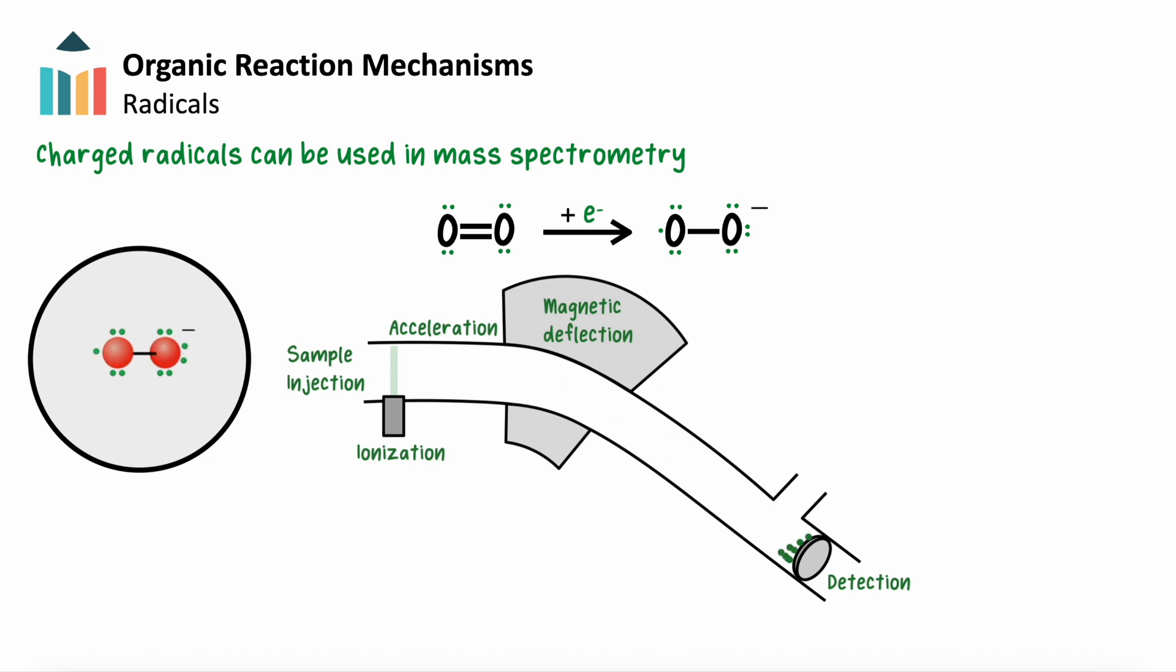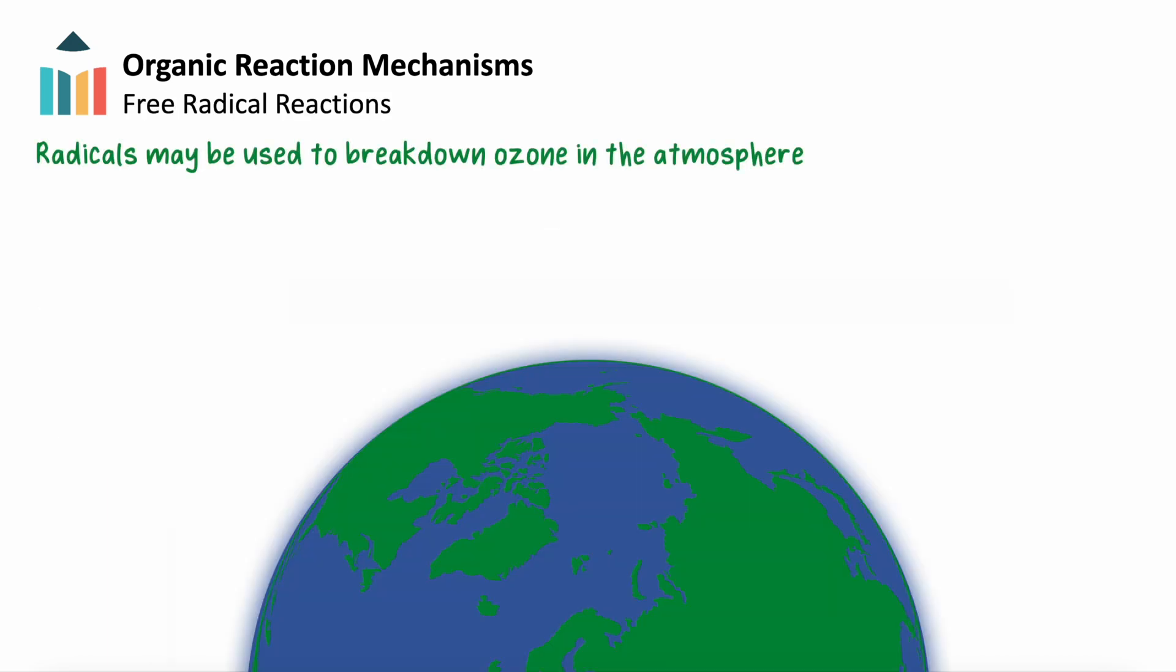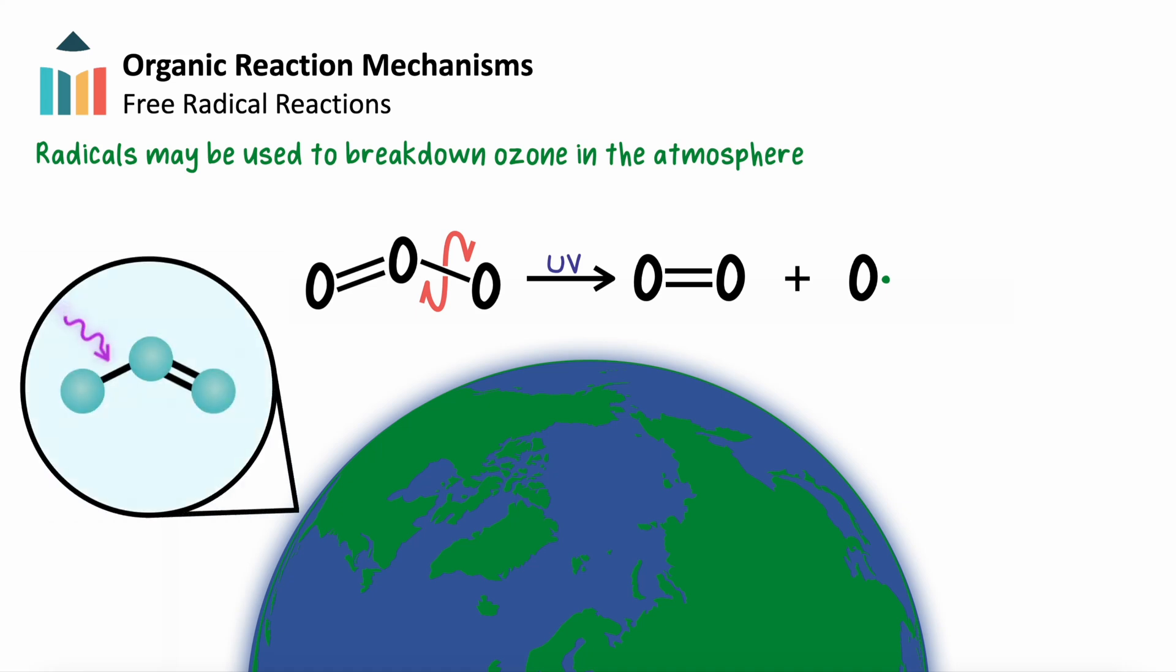Going back to reactions between radicals, we see radicals play an important role in the breakdown of ozone in the atmosphere. Ozone is a molecule consisting of three oxygen atoms. The absorption of UV light by ozone will cause the molecule to undergo homolytic fission and produce an O2 molecule and an oxygen radical. By doing this, the ozone layer helps protect us from damaging rays created by the sun.